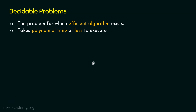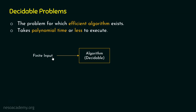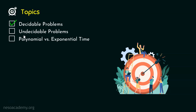To summarize: an efficient algorithm accepts a finite input and terminates in polynomial time or less. The problem it solves is called a decidable problem — we can decide the output within a limited, bearable timeframe. Now let's move to undecidable problems.